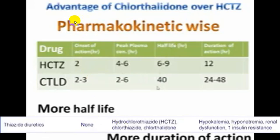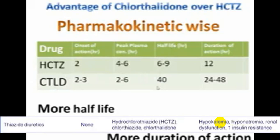Chlorthalidone has an advantage over hydrochlorothiazide because of its longer half-life. Chlorthalidone has a half-life of approximately 40 hours, giving a duration of action of 24 to 48 hours. Hydrochlorothiazide has a half-life of only 6 to 9 hours and a duration of action of only 12 hours. Therefore chlorthalidone has more sustained action, but keep in mind that higher doses increase the risk of electrolyte imbalance and metabolic disturbances.